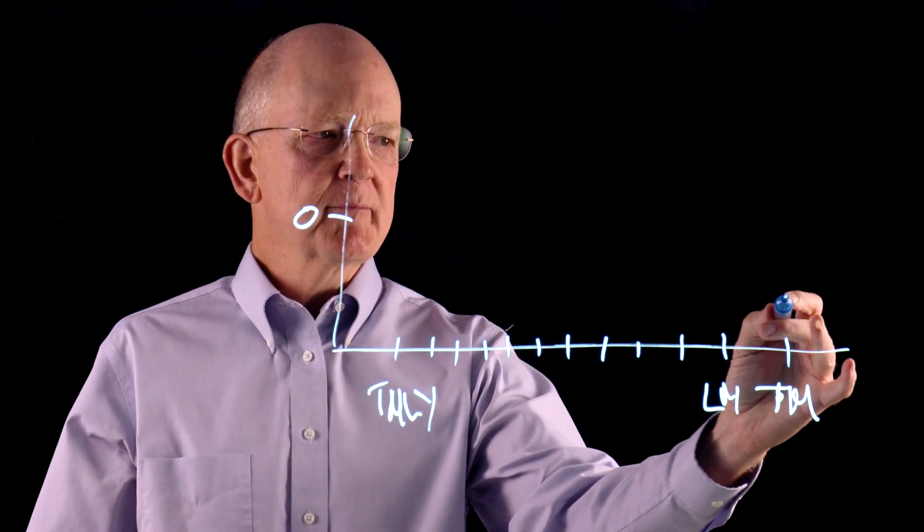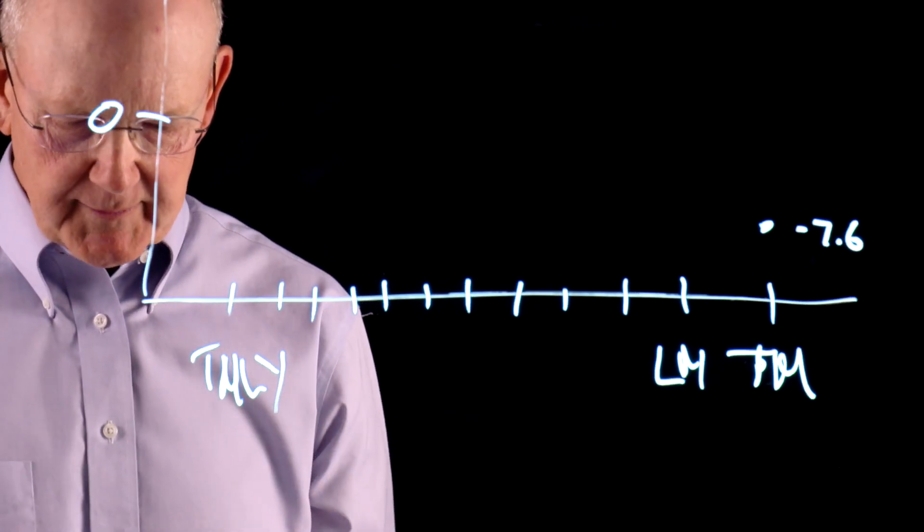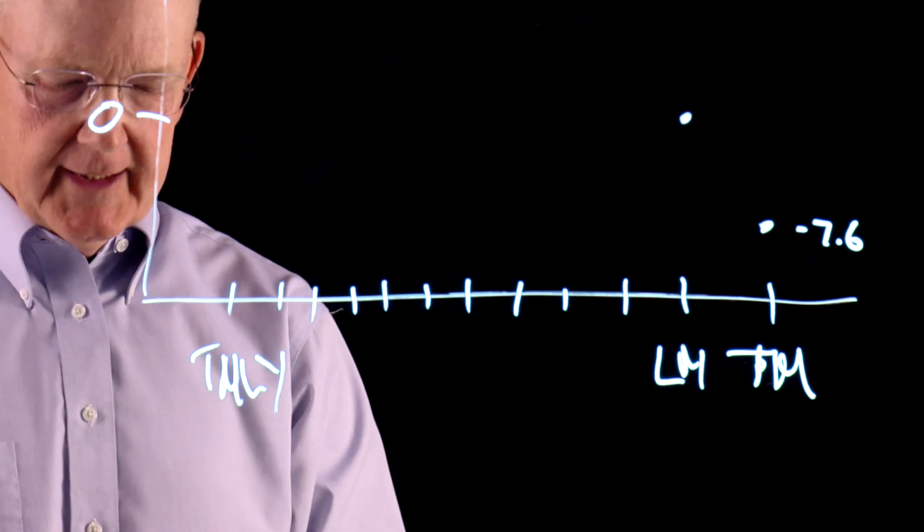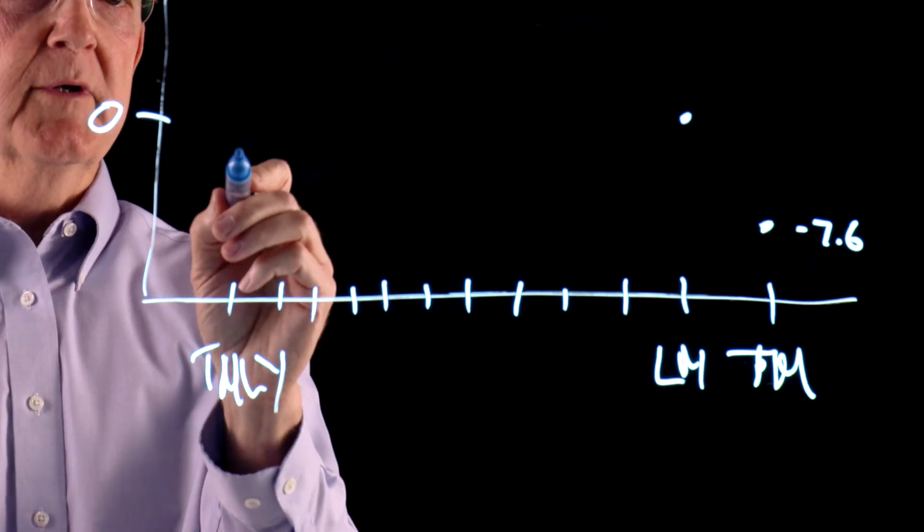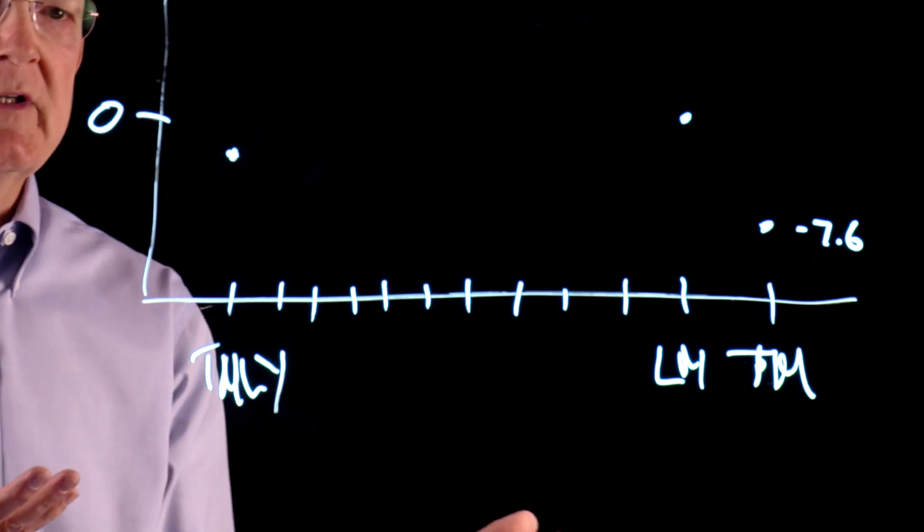So this month we were minus 7.6%. Last month we were plus 1.1%. And this month last year we were minus 1.4%. So there are three data points there.